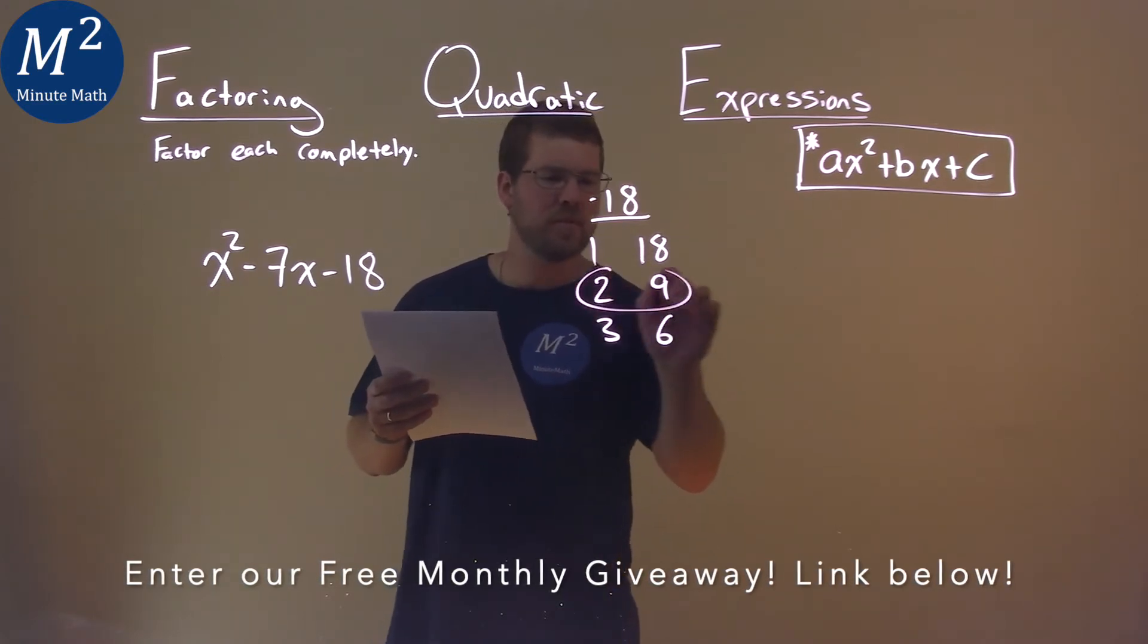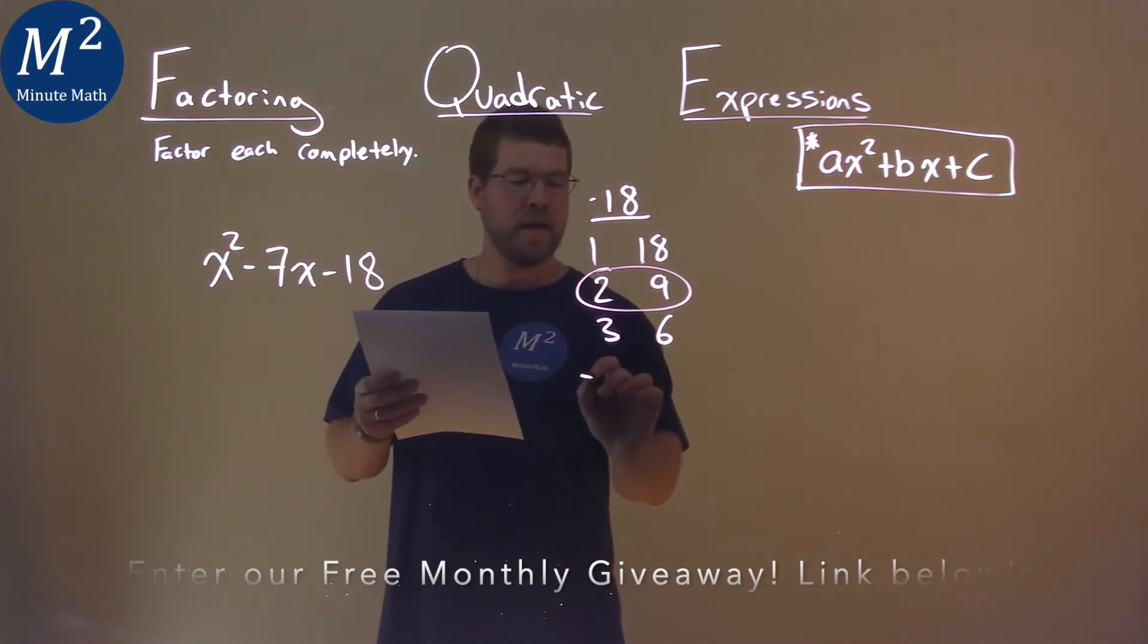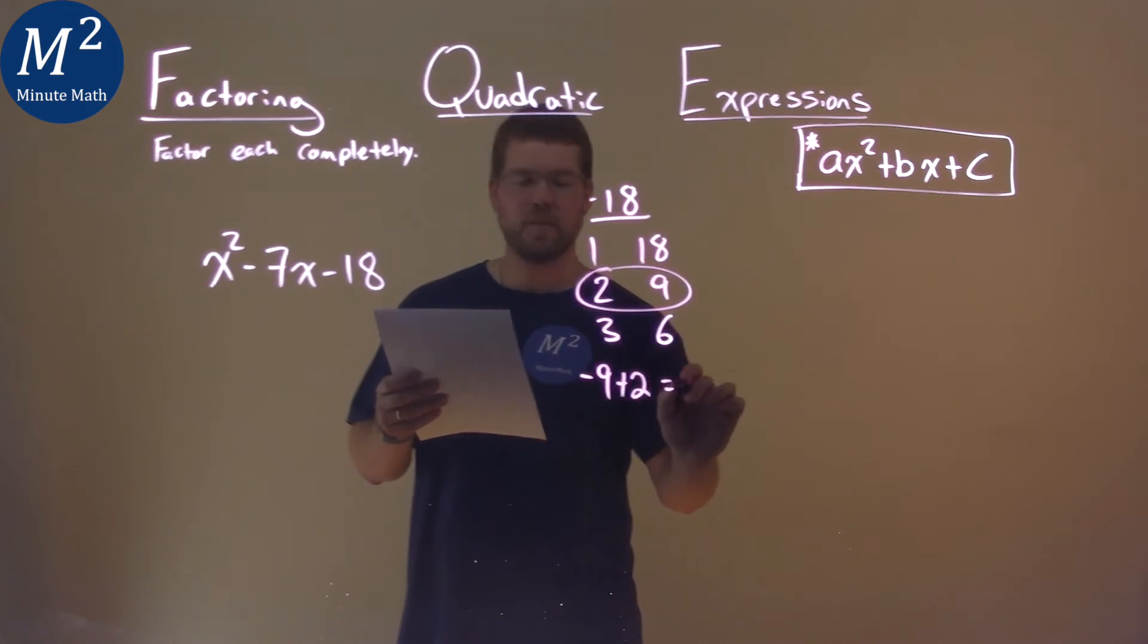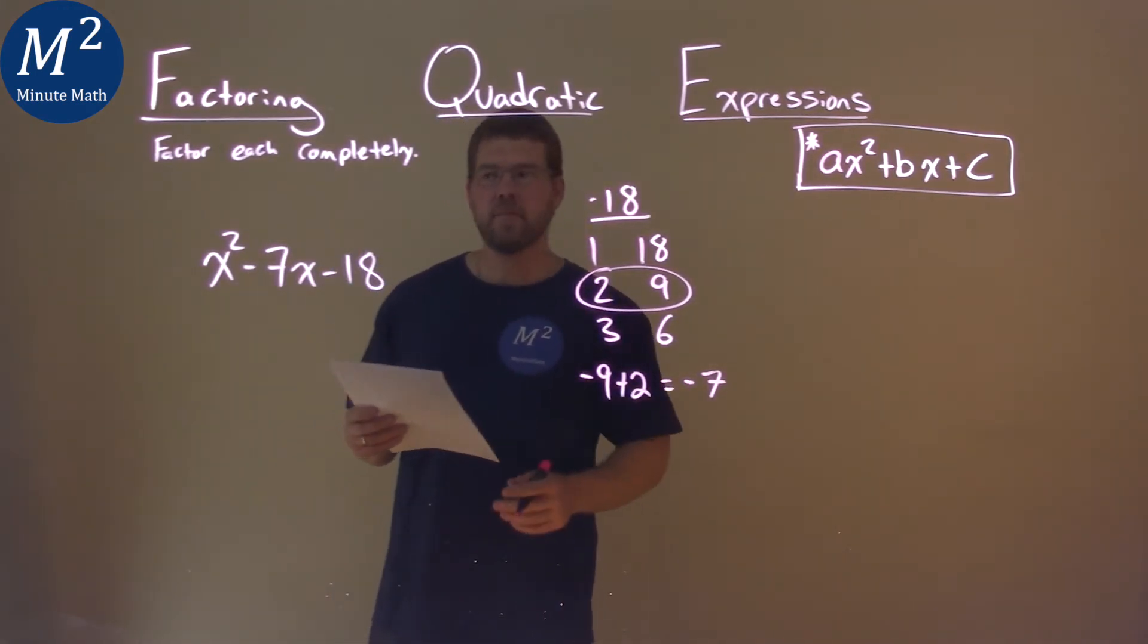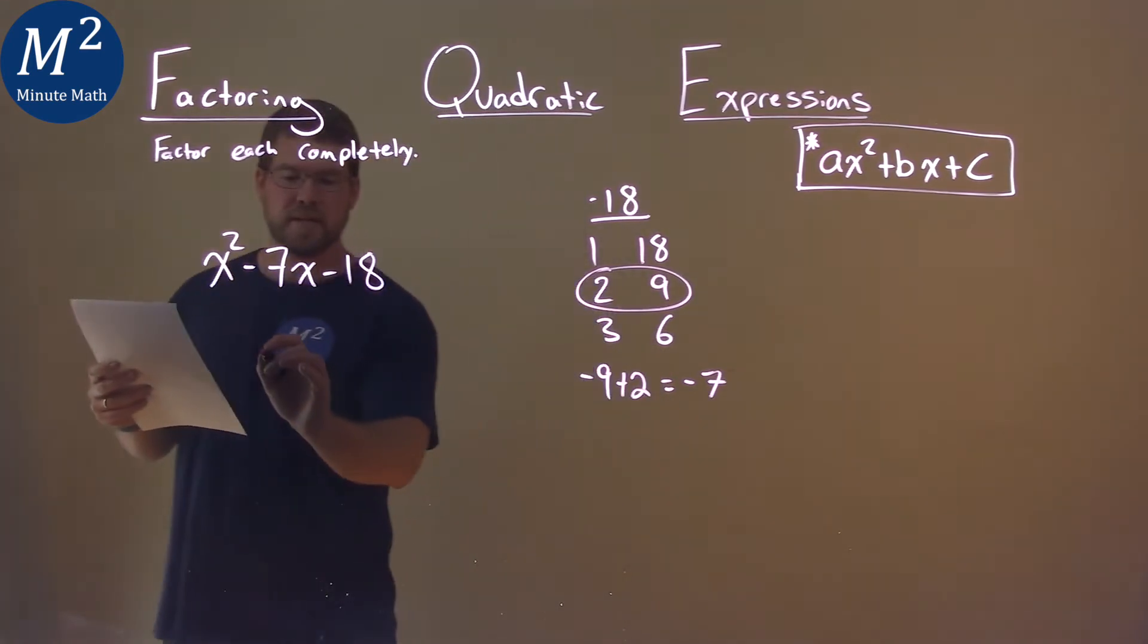And I'm looking at my 2 and my 9. Negative 9 plus 2 equals a negative 7. All right, so with that information, this is actually pretty simple to break down.